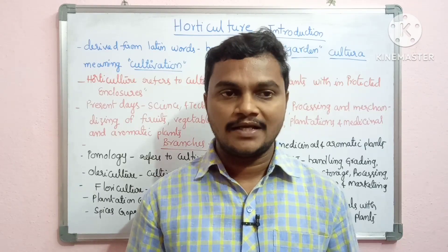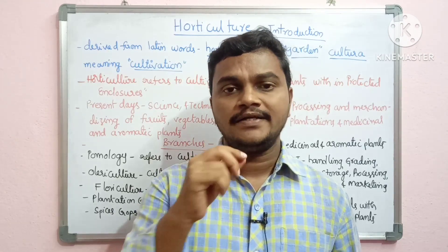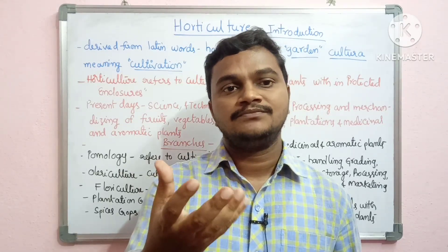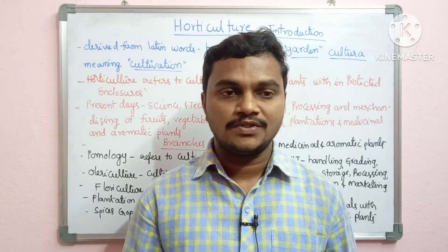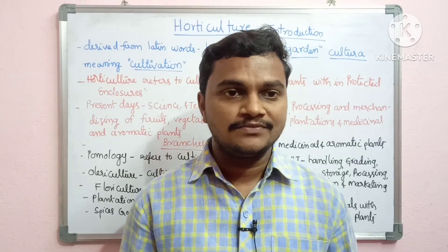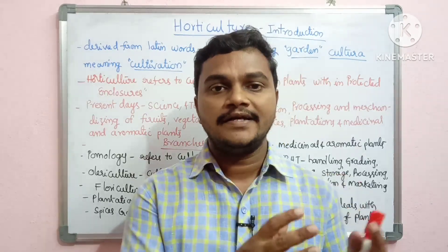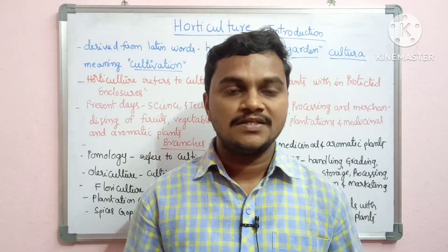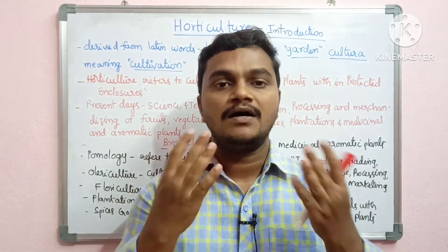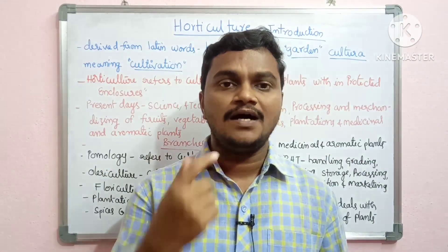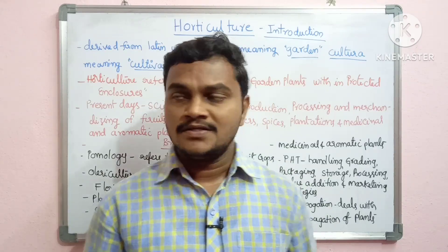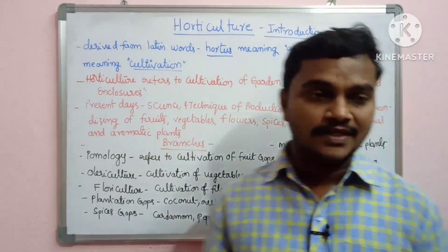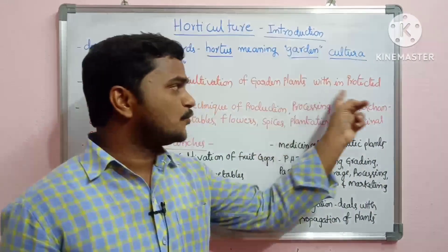Agriculture has a branch called horticulture. Horticulture is derived from the Latin word 'hortis', which means garden or gardening. 'Culture' means cultivation. So horticulture refers to the cultivation of garden plants in a particular protected area.